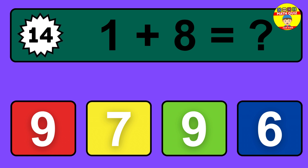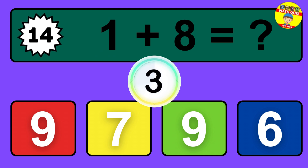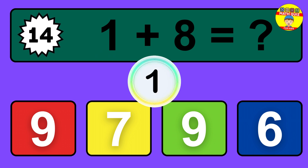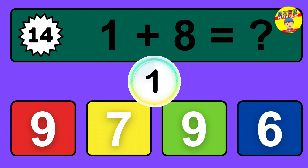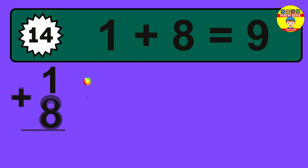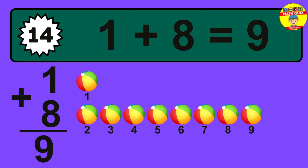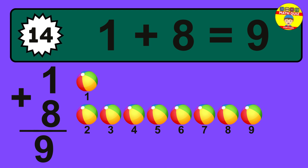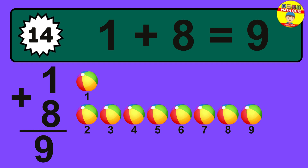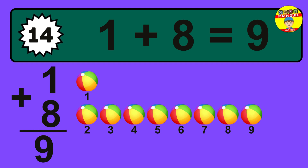Question 14. 1 plus 8 equals what? The answer is 1 plus 8 is 9. Let's count it: 1, 2, 3, 4, 5, 6, 7, 8, 9.